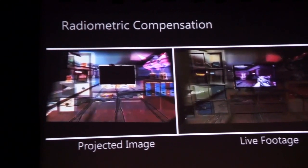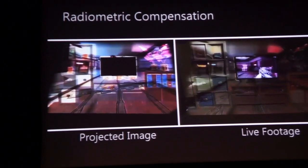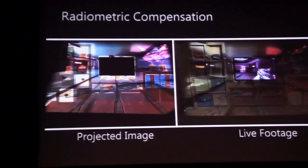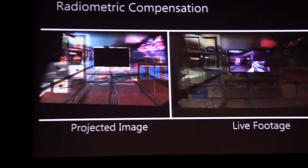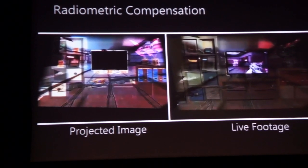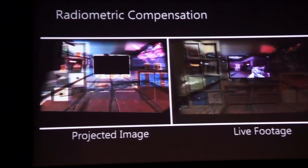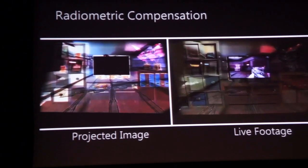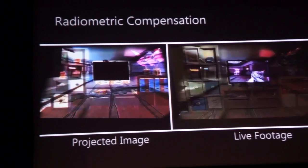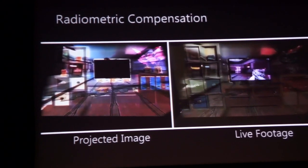You can see the paper for more details about the calibration. Because we're not projecting onto a flat white screen, we must adapt our projection to the furniture through a process called radiometric and geometric compensation. On the left you can see a compensated image — that's what we're projecting — and on the right is a live camera view of what the viewer is seeing.